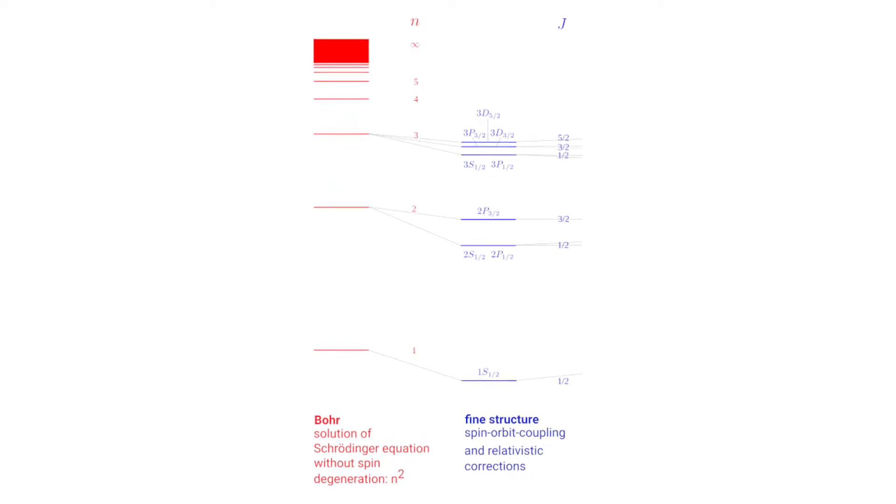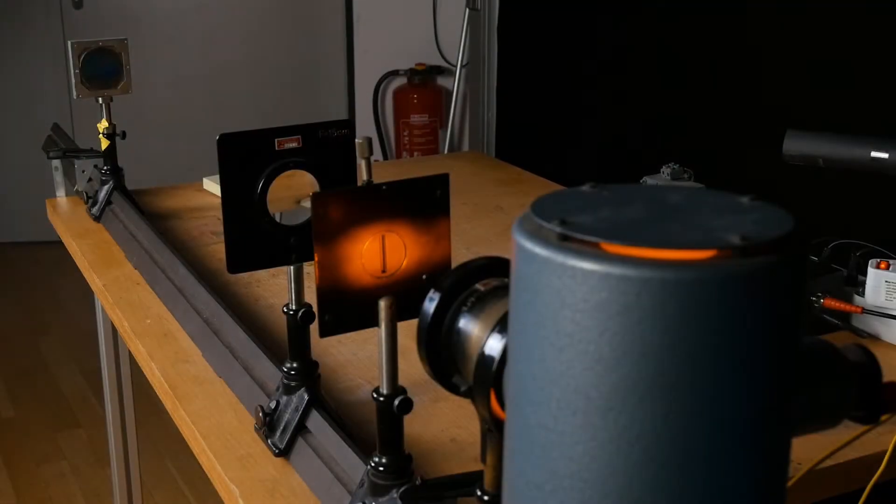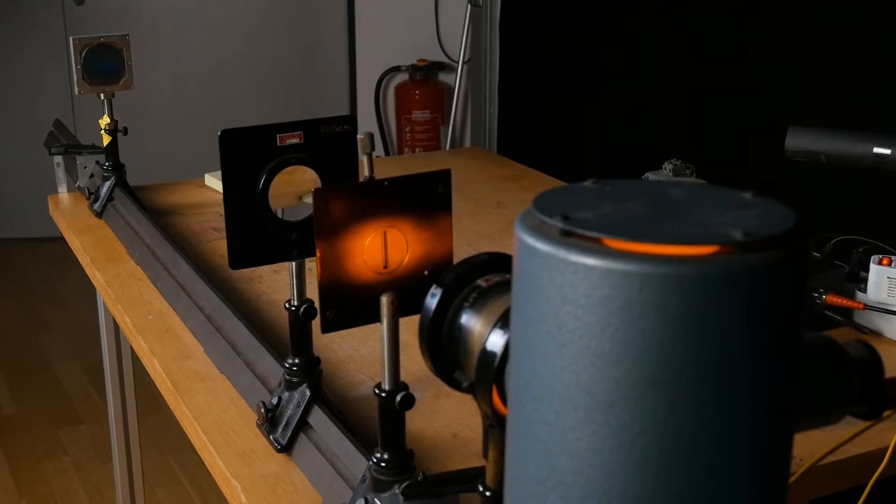In this experiment, the yellow spectral line of sodium is studied, which is a double line, also called sodium D-line. To display the sodium double line, the following setup is chosen. The light of a sodium lamp, yellow, is directed onto a slit.